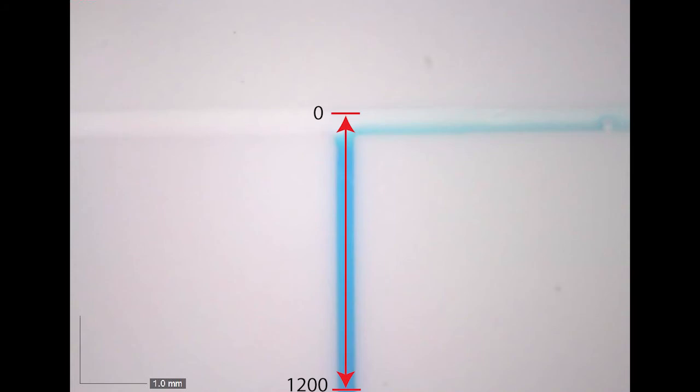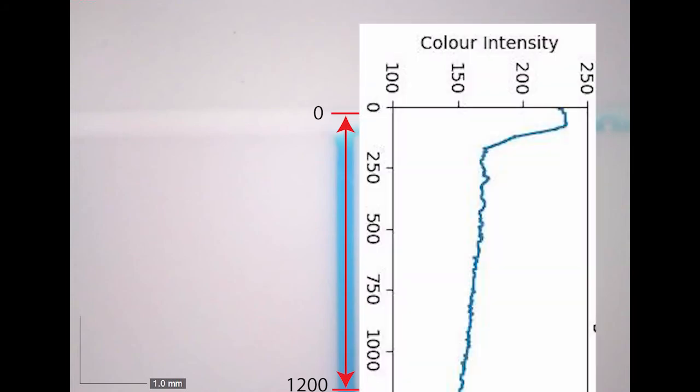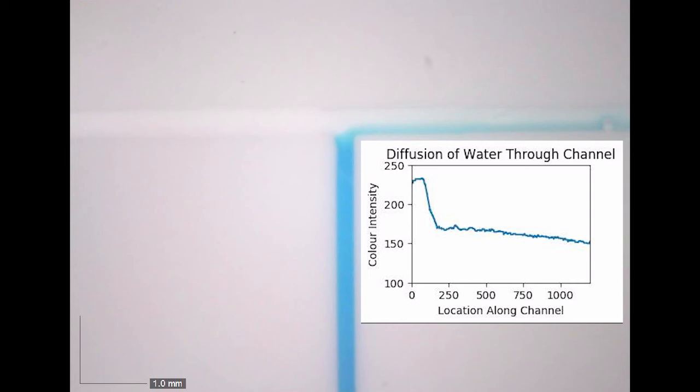We place an axis on the channel and plot the color intensity along it. This intensity indicates the relative concentration of dye at points along this channel.